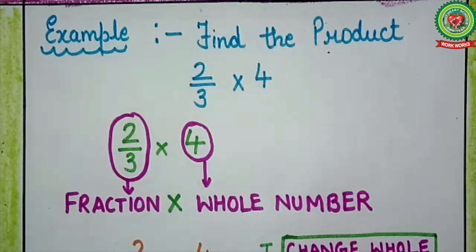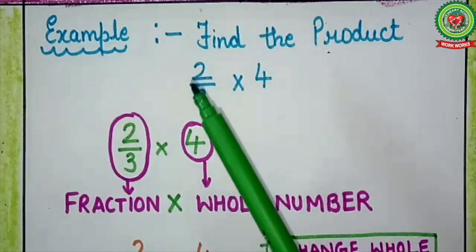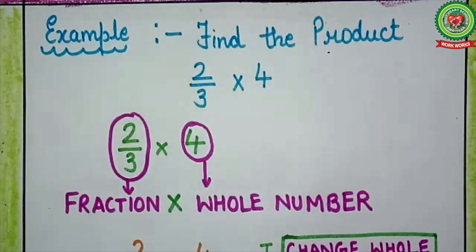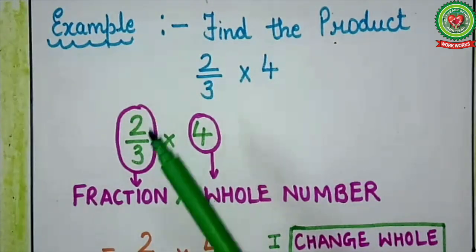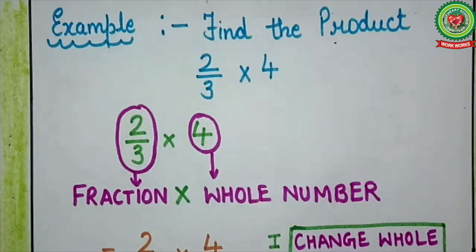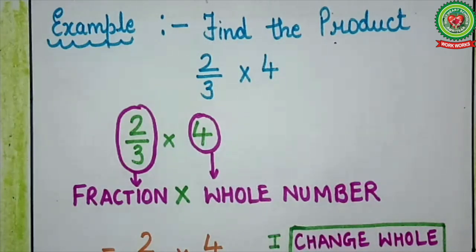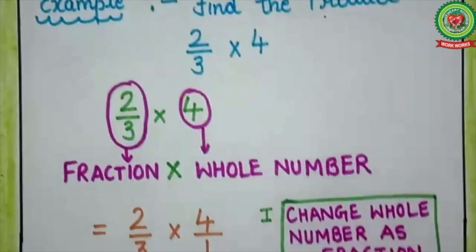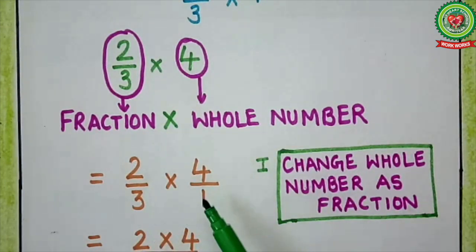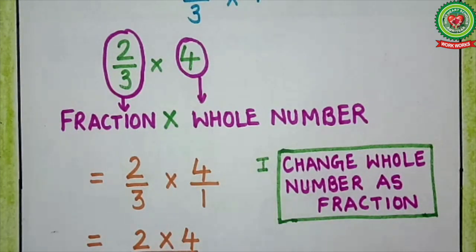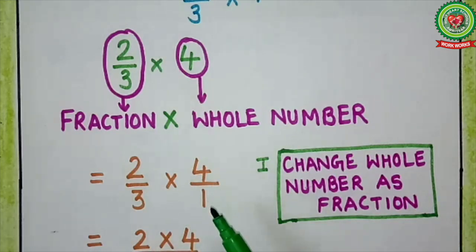Let's understand with examples. Here we have to find the product of 2 upon 3 and 4. Product means multiply, so we have to multiply 2 upon 3 and 4. As you can see, 2 upon 3 is a fraction and 4 is a whole number. Step 1: change the whole number as a fraction — if I write 1 as the denominator, 4 will change into a fraction. So I write: 2 upon 3 multiplied by 4 upon 1.